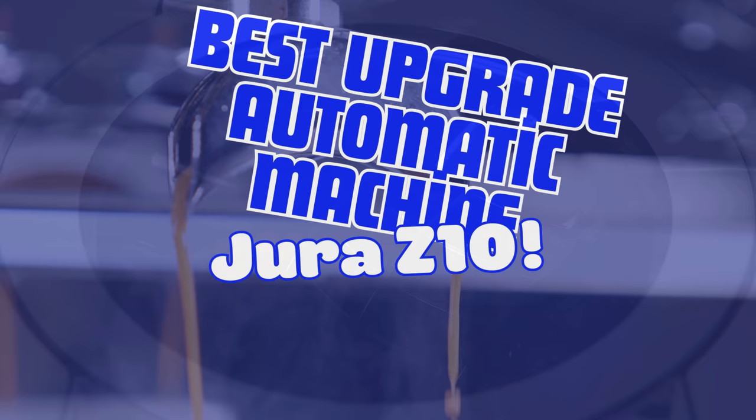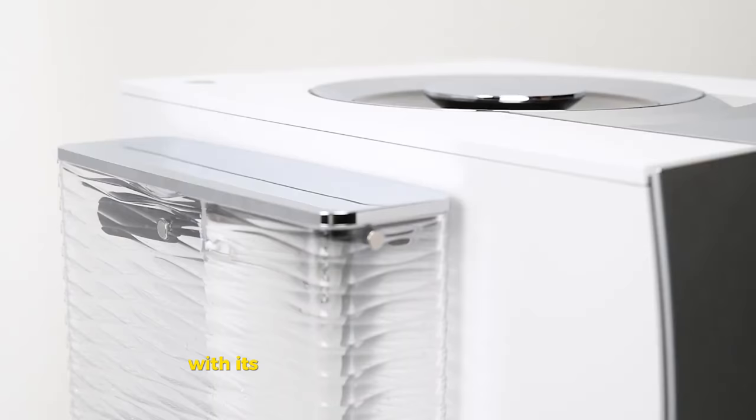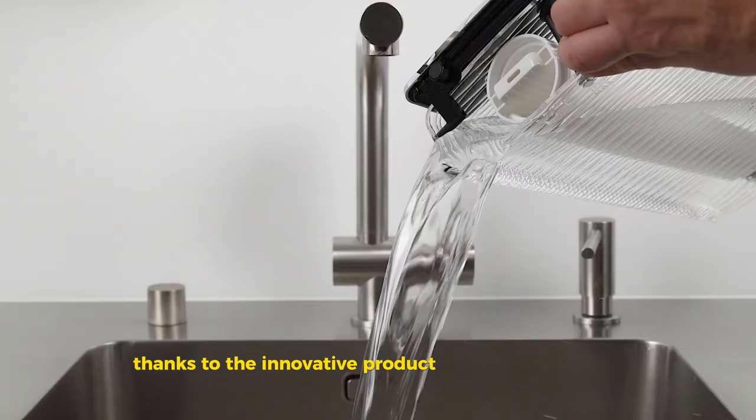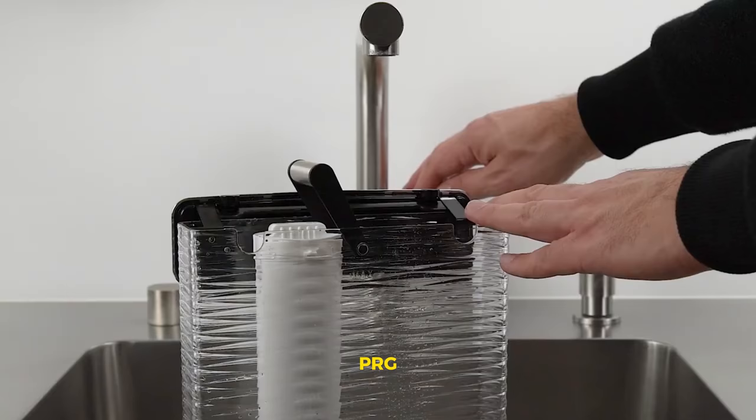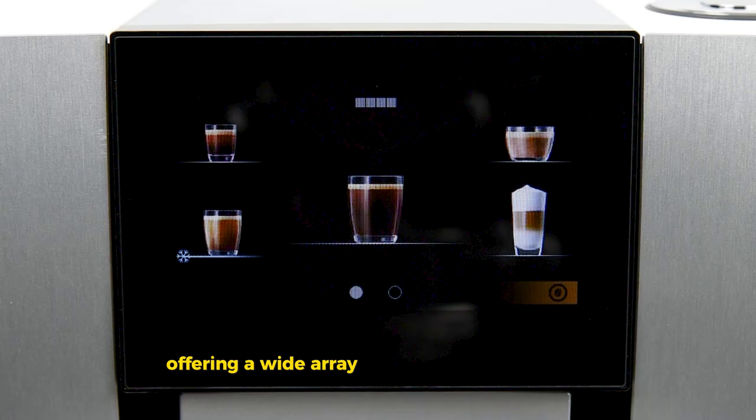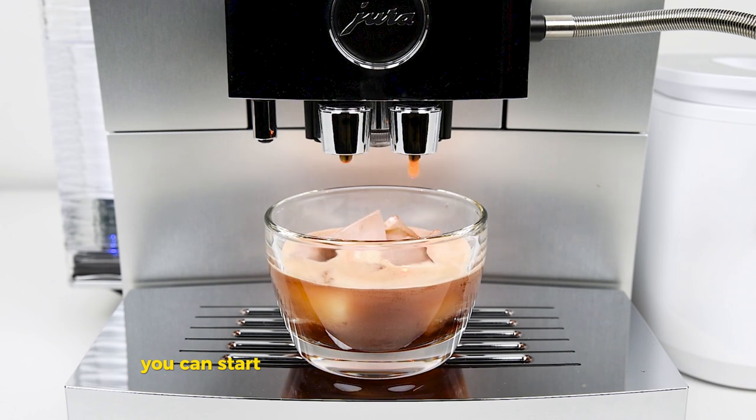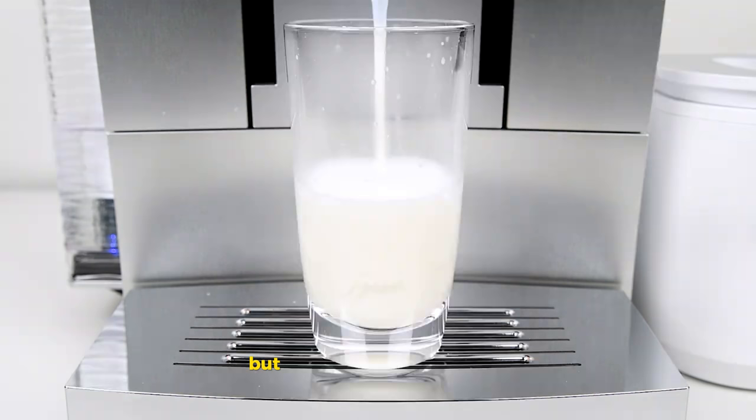Best upgrade automatic machine, Jura Z10. Last, but definitely not least, for the tech-savvy and those looking for cafe-quality espresso at home, the Jura Z10 is a dream come true. With its ability to brew both hot and cold espresso beverages at the touch of a button, thanks to the innovative product-recognizing grinder PRG, it stands in a league of its own. It's customizable, offering a wide array of espresso-based drinks and even cold brew options. And with the companion Joe app, you can start brewing from anywhere in your home. It's a premium choice, both in terms of price and features. But for espresso aficionados seeking the ultimate convenience and quality, the Jura Z10 is hard to beat.